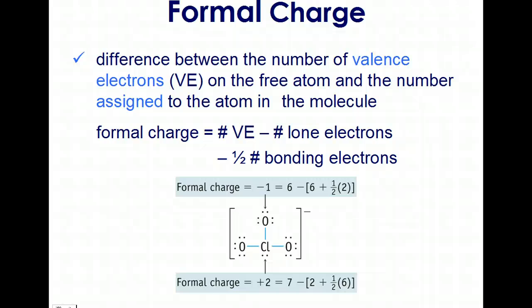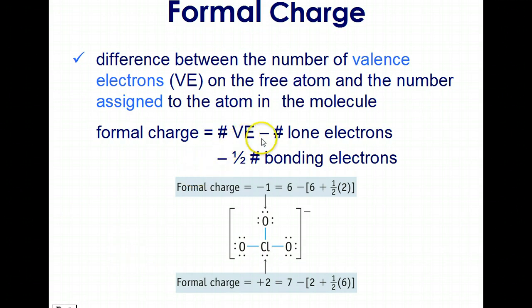This video is going to look at formal charge and resonance structures. Formal charge is the difference between the number of valence electrons present for a given element and the lone electrons assigned to that element, minus half of the bonding electrons.